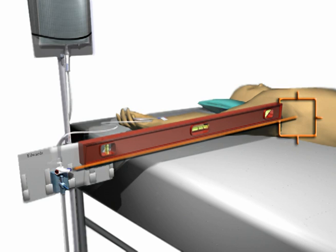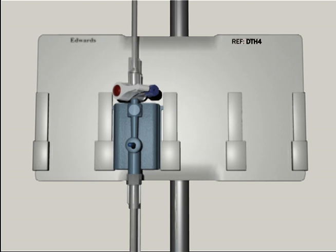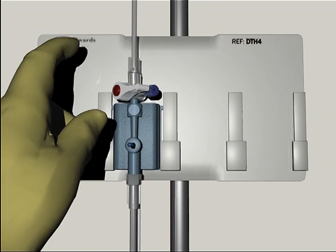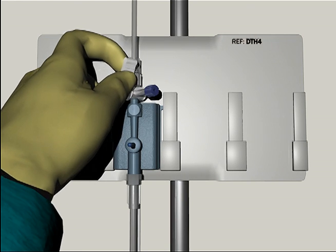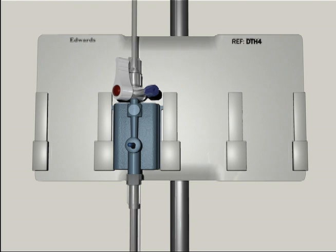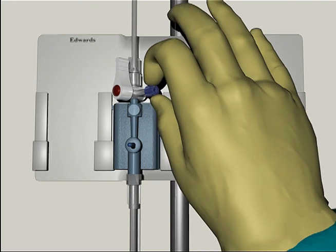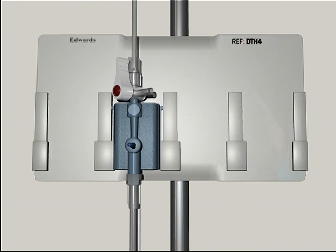The TrueWave transducer must be zeroed to remove the effects of atmospheric pressure. Open the stopcock above the transducer to atmospheric air by turning the stopcock toward the patient's pressure tubing and away from the TrueWave transducer, then remove the non-vented cap.